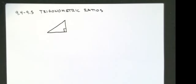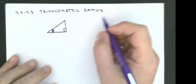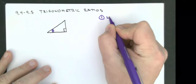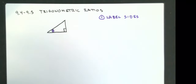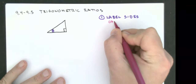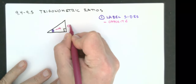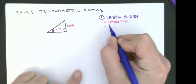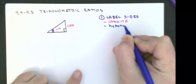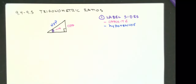Given a triangle and one of the angles in it, I'm going to call that angle theta. Our first step anytime we're going to do a trig ratio is we are going to label the sides. The first side I label is the opposite side — the side opposite the angle. The next one is the hypotenuse (HYP), and the last one we call the adjacent side.